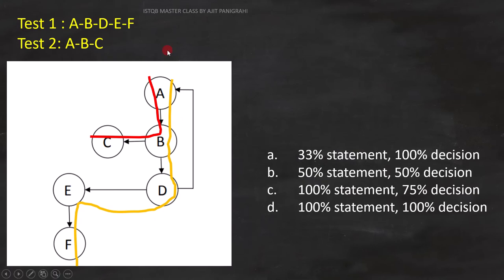Now based on the same test case, we will find decision coverage. Any circle which has two outcomes are decisions. For example, circle B and circle D are the decisions. Let's first analyze circle B.